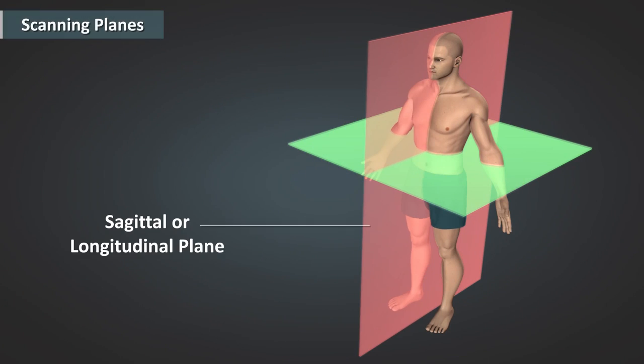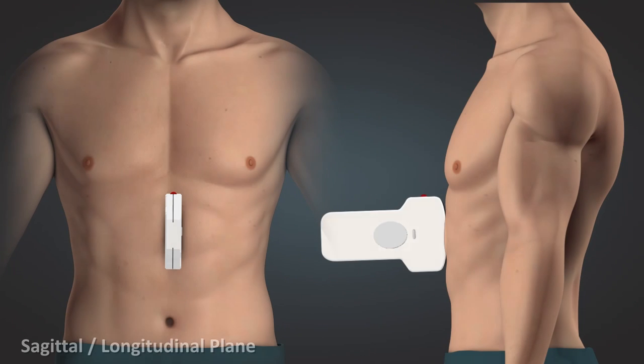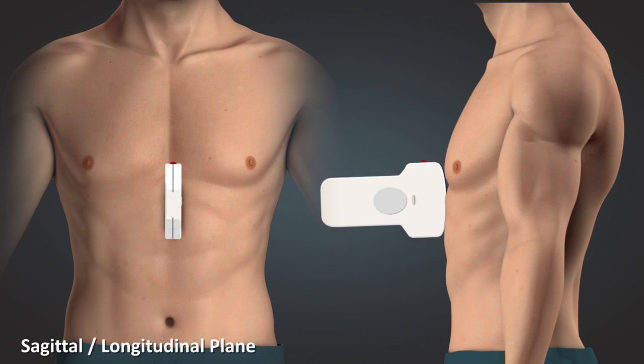Next, we will look at the longitudinal or sagittal plane. The sagittal plane is oriented perpendicular to the ground, separating the patient's left from the patient's right.